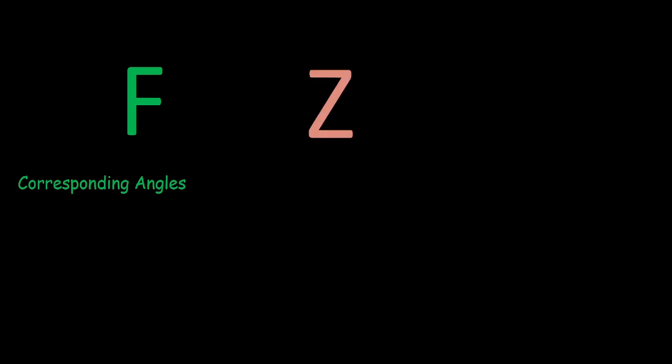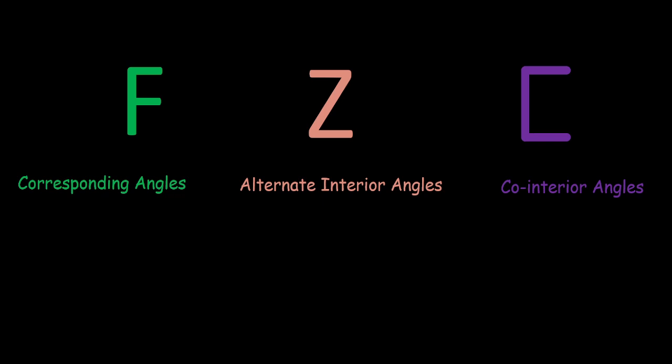So, if we look for an F-shape and find that the corresponding angles are equal, we know that the lines will be parallel. Similarly, if we look for a Z-shape where the alternate interior angles are equal, we know that lines will be parallel. And lastly, we can look for a C-shape — if the co-interior angles sum up to 180 degrees, we know that the lines will be parallel to each other.